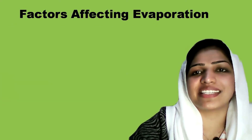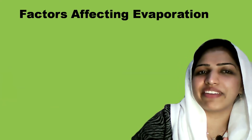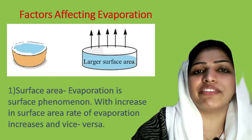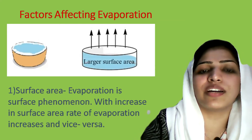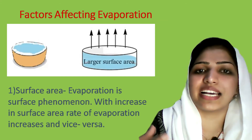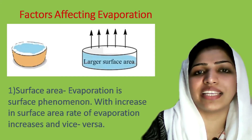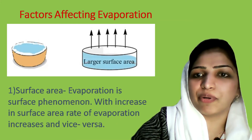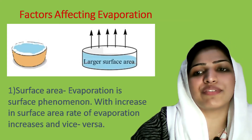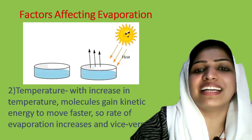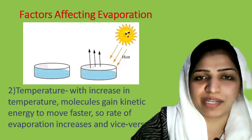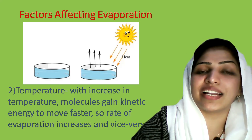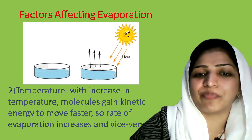Evaporation is the process of conversion of liquid into its vapor state at any temperature below the boiling point. Now let's look at the factors affecting the rate of evaporation. The first factor is surface area — if we increase the surface area, the rate of evaporation increases. The second factor is temperature — higher temperature means more molecules have enough energy to evaporate, so the rate of evaporation increases.